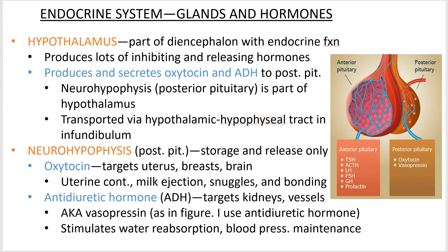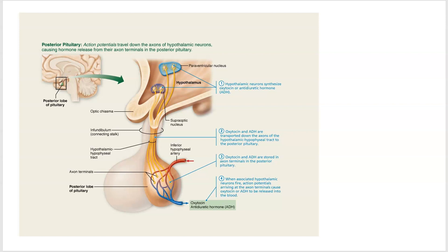Antidiuretic hormone targets the kidneys and blood vessels. The kidney function is why we call it antidiuretic hormone — it is against diuresis. Diuresis is water loss, so antidiuretic means it reduces water loss. When we get to the urinary system, we'll go into more detail. The vasopressin name refers to blood vessel constriction, so it keeps your blood pressure up. Here's a diagram of both the hypothalamus and the posterior pituitary, and you can see the hypothalamic hypophysial tract right there.